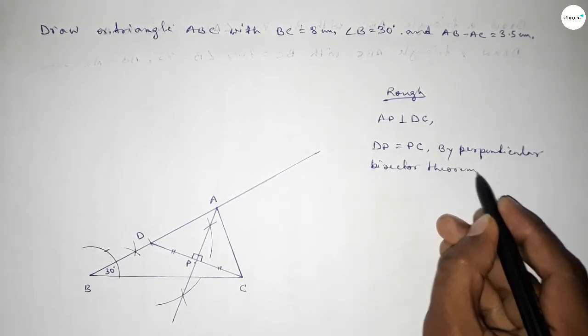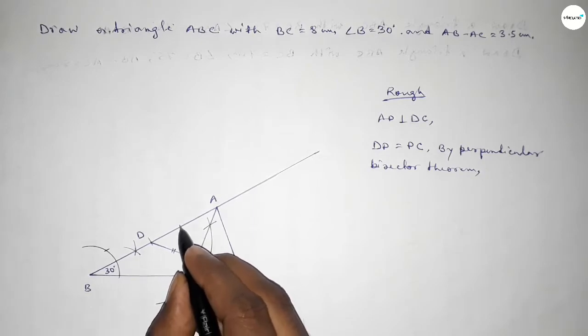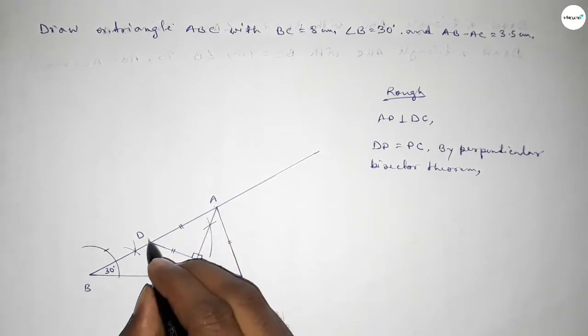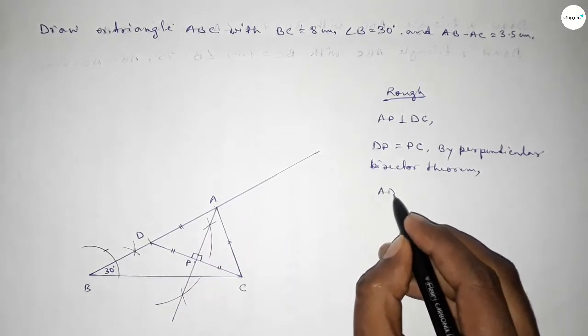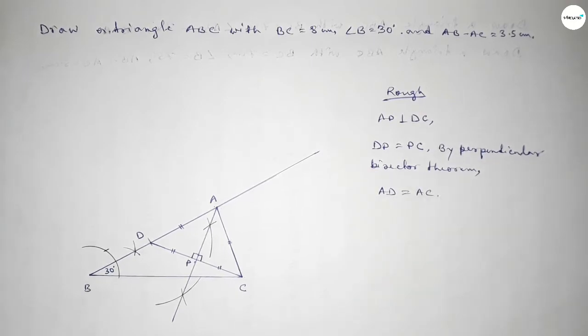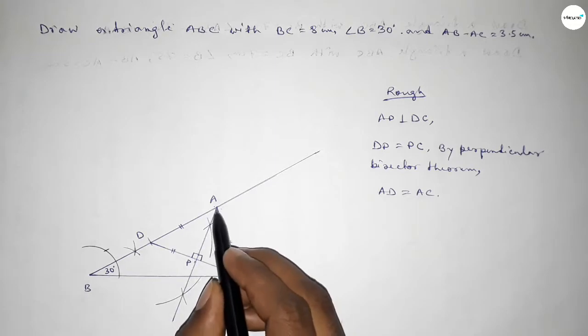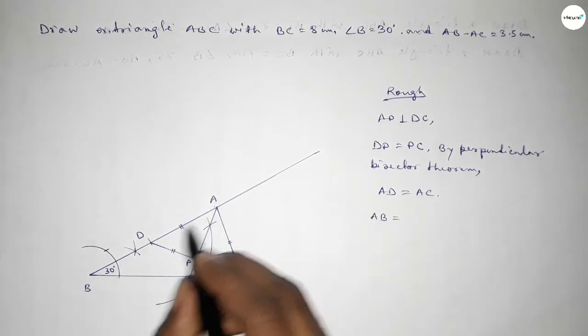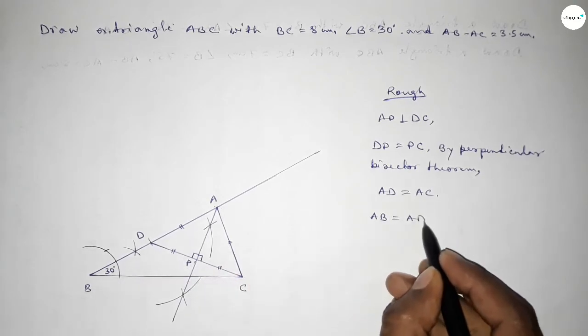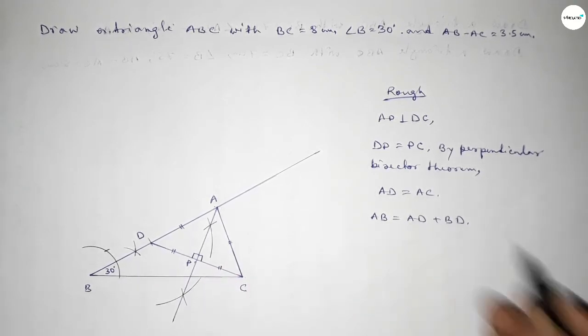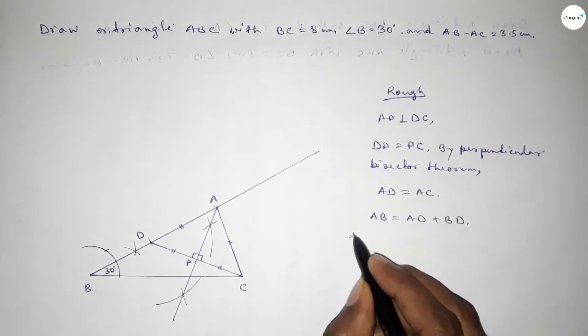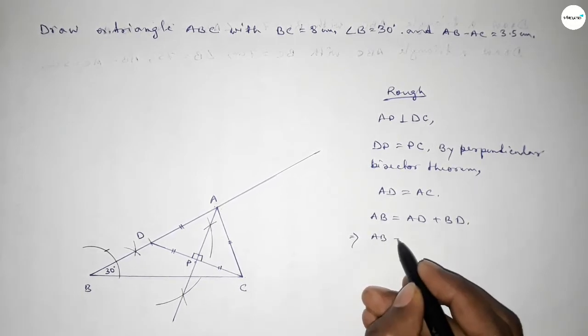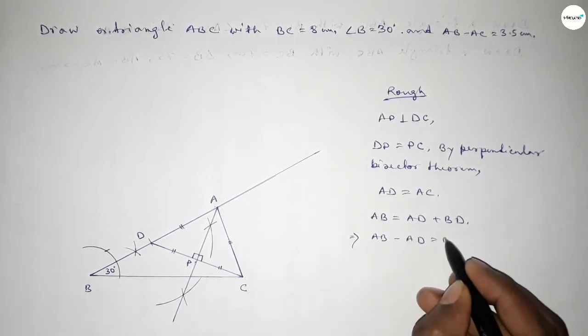By perpendicular bisector theorem, we can say that the length AD and AC also equal. So AD equal to AC. Now we can write AB, so AB equal to AD plus BD or DB.